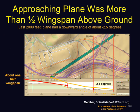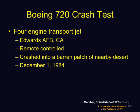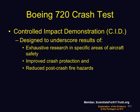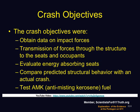Here is the topography of the approach to the Pentagon. The plane was more than half wingspan above the ground until the last 2,000 feet, and seriously below that only for about the last 1,200 feet. The Boeing 720 Crash Test was done with a four-engine jet at Edwards Air Force Base in California. It was remotely controlled and crashed into a barren patch of desert on December 1, 1984. It was a controlled impact demonstration designed to improve crash protection, reduce post-crash fire hazards, obtain data on impact forces, evaluate energy-absorbing seats, compare predicted structural behavior with an actual crash, and to test a particular kind of fuel.